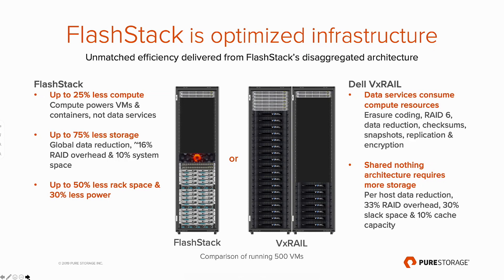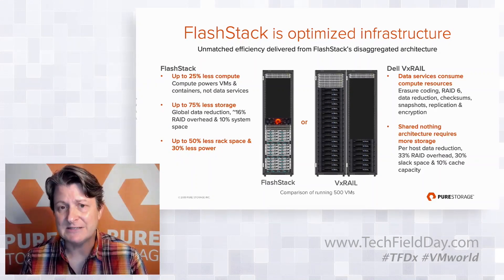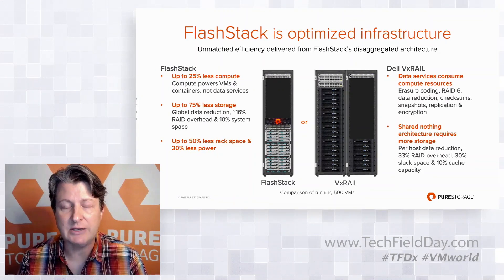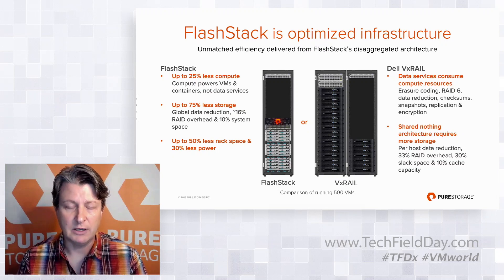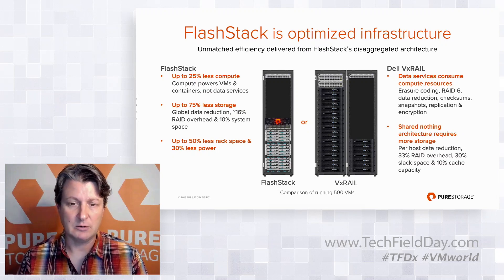When you combine the compute and storage savings together, you get about 50% less rack space and about 30% less cost required for this architecture. By being able to optimize this infrastructure, it becomes more affordable both from a data center footprint, cost-per-rack-unit perspective, and also from the number of rack network ports required.